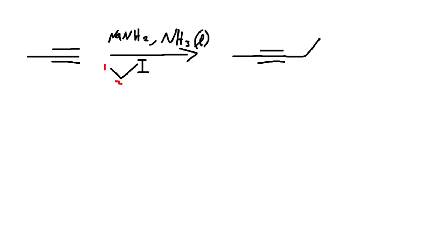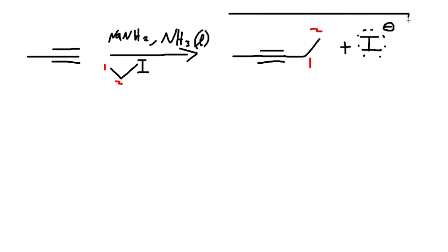Stretch it out, and there we go. So now we have one and two carbons, and the iodine would be on the side. It's not important to draw the halogen element when only doing the product, but when doing the mechanism it is actually important because you'll see the whole picture, but this is the answer for this part.